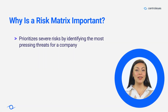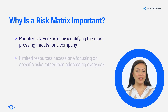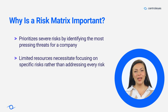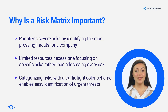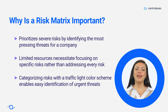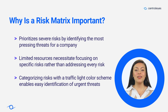A risk matrix helps prioritize the most severe risks faced by a company, considering that resources are limited and not all risks can be addressed. Categorizing risks using a traffic light color scheme on the matrix allows for easy identification of the most urgent threats, enabling focused attention on them. Ultimately, organizations need to accept a certain level of risk to achieve success.